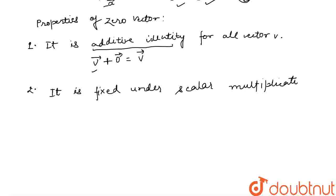When we do scalar multiplication of any vector, like if vector A is multiplied by 2, the magnitude becomes double, 2A. Same way, if we do scalar multiplication with zero vector, x times zero vector where x is any scalar, it doesn't change. This is a property of zero vector: it is fixed under scalar multiplication.